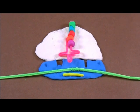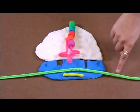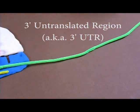When a ribosome encounters a stop codon, translation stops. The area between the stop codon and the end of the mRNA transcript is known as the 3' untranslated region.